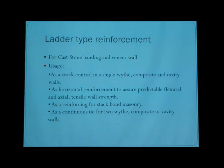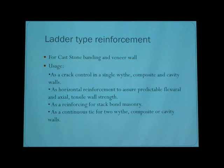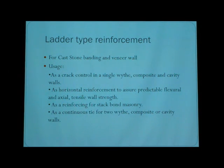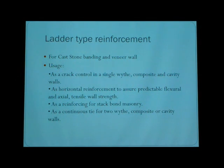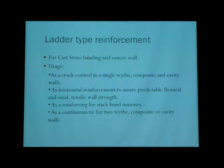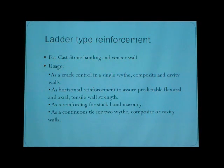Another commonly used type is the ladder pipe. The ladder pipe is commonly used for cast stone, concrete block, and masonry. It can be used as a tie control in single-wythe, composite, and cavity walls. It can be used as horizontal reinforcement to provide predictable flexural and axial tensile strength. It can also be used as reinforcement for stack bond masonry.